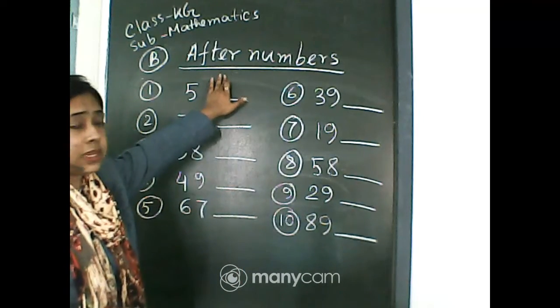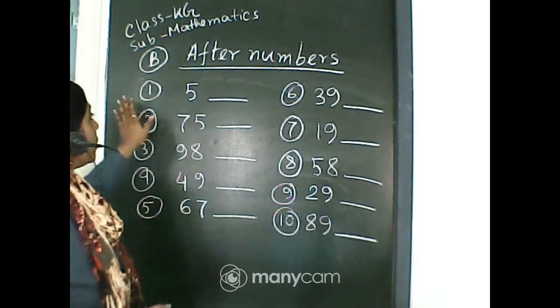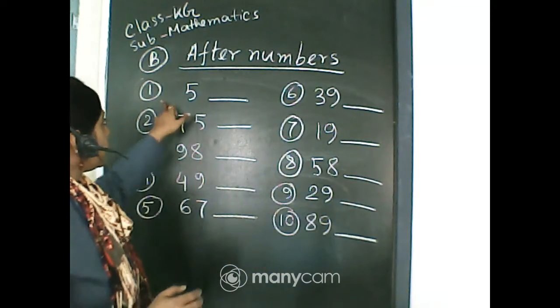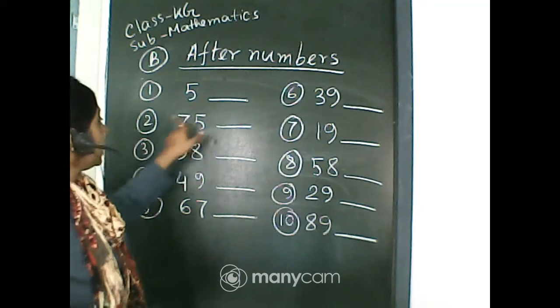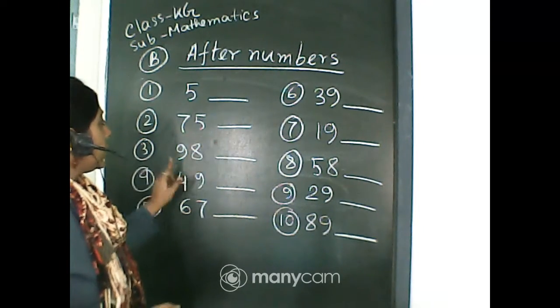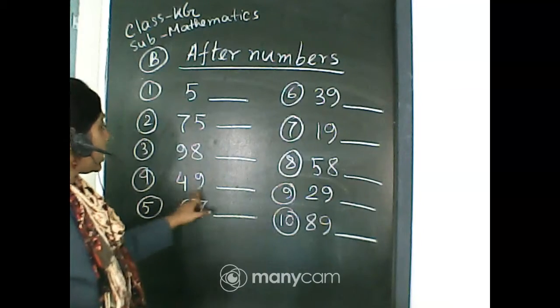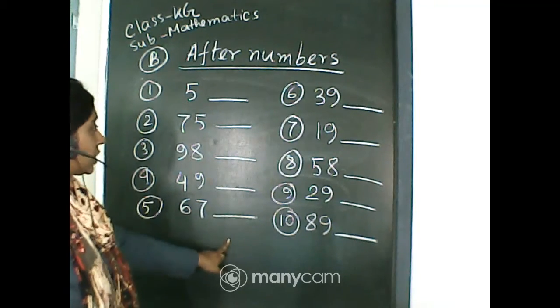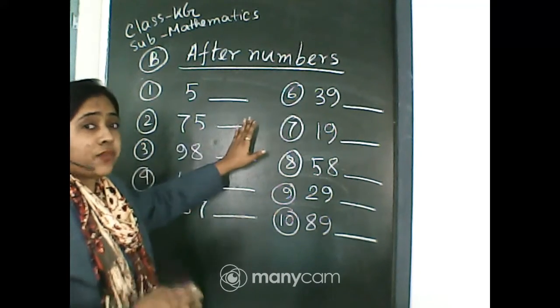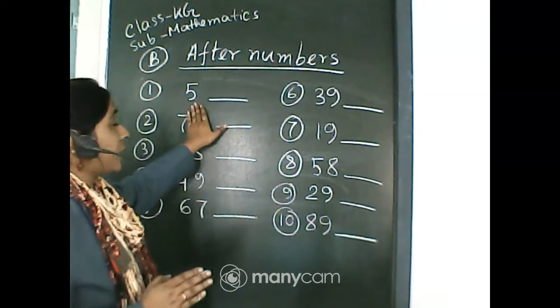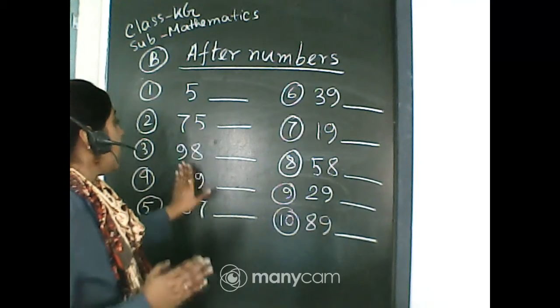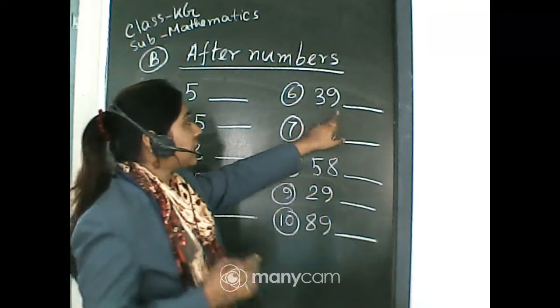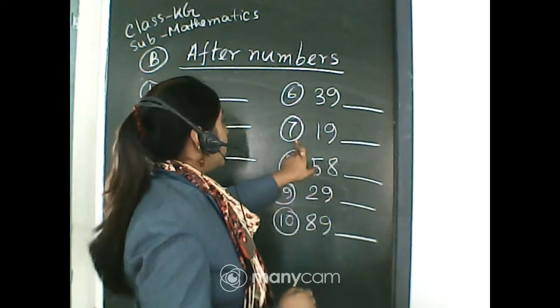Here I have written 'after numbers'. I have given 10 numbers: number 1 is 5, number 2 is 75, number 3 is 98, number 4 is 49, number 5 is 67. Here you will write the after number - after number of 5, after number of 75, after number of 98, like this. Number 6 is 39, number 7 is 19.